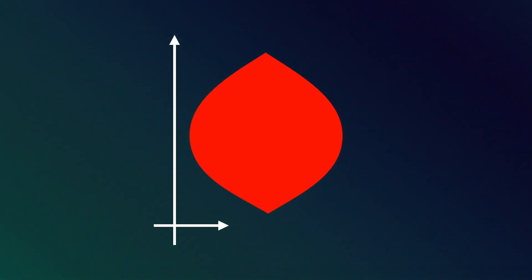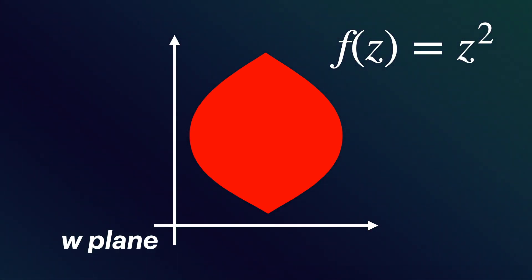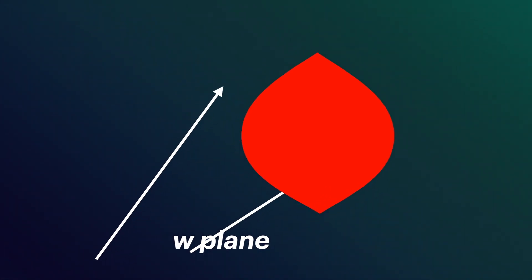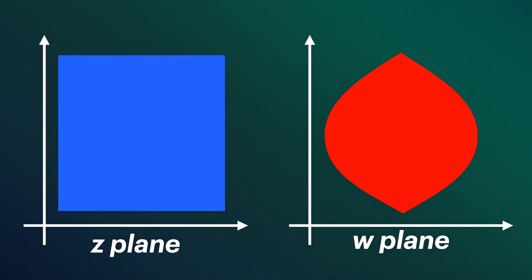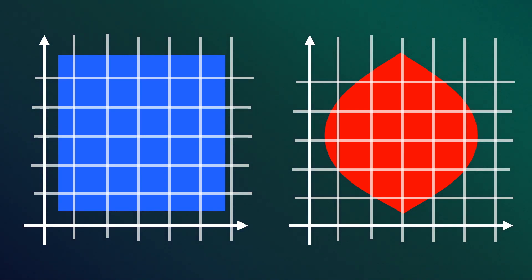The red points represent the grid after applying the complex function f(z) = z². This transformation maps each point from the original z-plane to a new location in the w-plane. Notably, the transformation preserves angles at each point. Although the distances between points, sizes, and shapes are altered, the angles where the grid lines intersect remain the same.